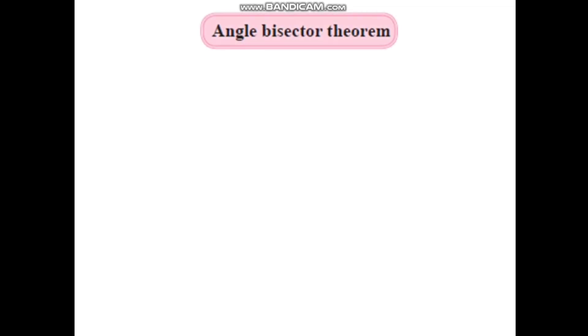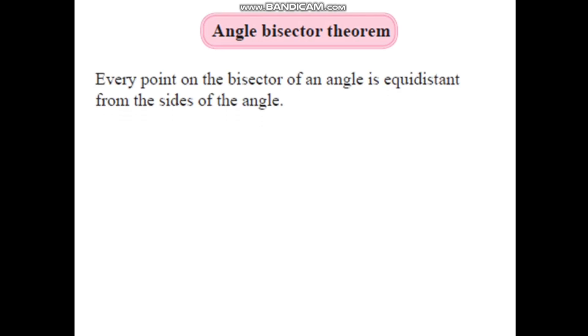Before that, let us understand what the angle bisector theorem is. The statement is: every point on the bisector of an angle is equidistant from the sides of the angle.